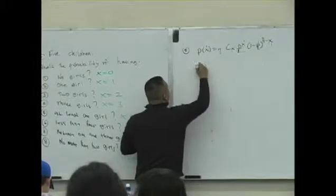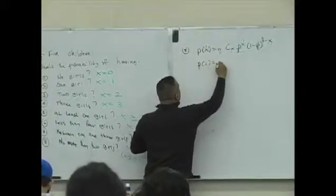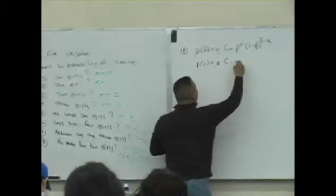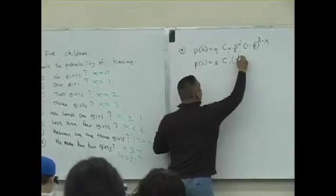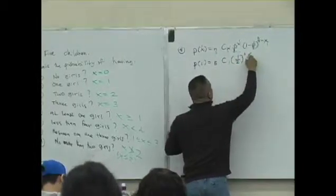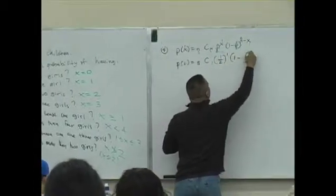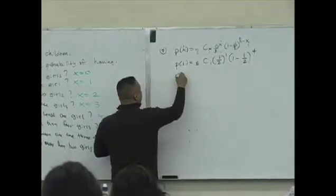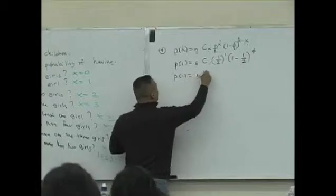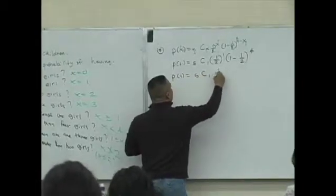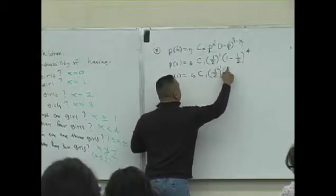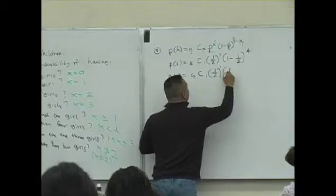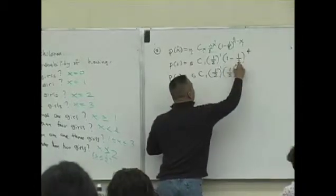So P of 1 is 5C1. 1 half to the what? 1. 1 minus 1 half to the, what's 5 minus 1? 4. See what happens. P of 1 is 5C1. 1 half to the 1. What's 1 minus 1 half? 1 half to the 1 half to the 4th.